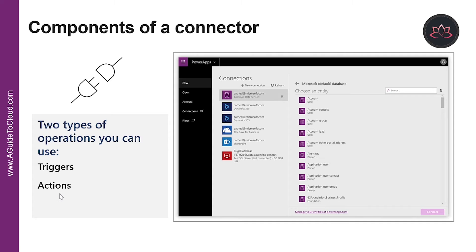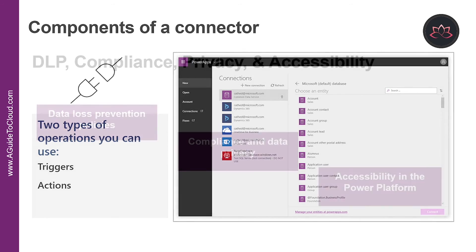Actions are used in Power Automate and Power Apps. Actions are prompted by the user or a trigger and allow interaction with your data source by some function. For example, an action would be sending an email in your workflow or app, or writing a new line to your data source.